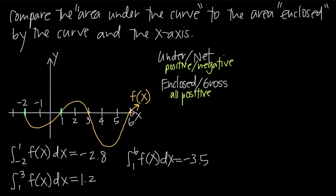Similarly, the integral from 1 to 3 means area under the curve or net area. The area there is 1.2 — it's positive because all of that area is above the x-axis. Then this last integral from 1 to 6 gives an area of -3.5. Before we label this third area as -3.5, notice that the interval is 1 to 6, which already includes the positive area of 1.2.